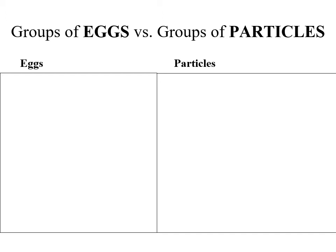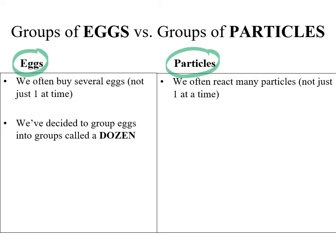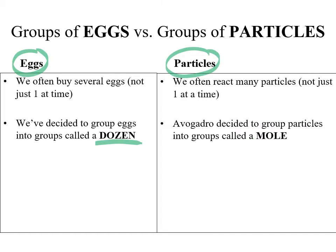To understand what the mole is, we can compare it to something we are familiar with — eggs, specifically chicken eggs. When you're working with eggs, you tend not to go to the store and buy a single egg. You buy several of them. When we're working with particles, same thing — we're not normally dealing with just one particle. We've decided that a handy amount of eggs to package together would be a dozen — 12 — which we call a dozen.